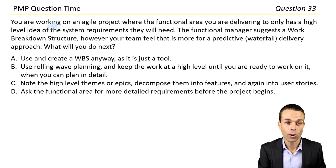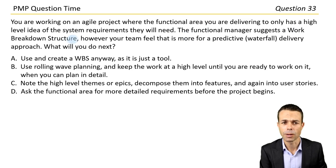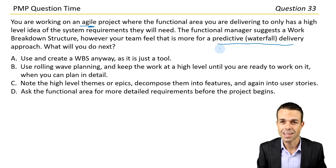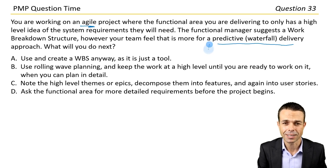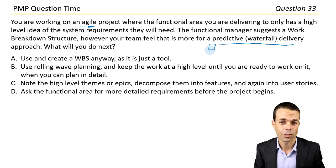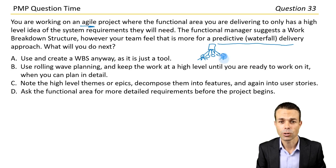You are working on an agile project where the functional manager you're delivering to only has a high-level idea of the system requirements they'll need. The functional manager suggests a work breakdown structure. However, your team feel that that is more for a predictive or waterfall delivery approach. What will you do next? We're working on an agile project — but does that mean we can't use a WBS? Not necessarily. Is there another way to do this in an agile project? Decomposition is the idea here and it still applies either way.